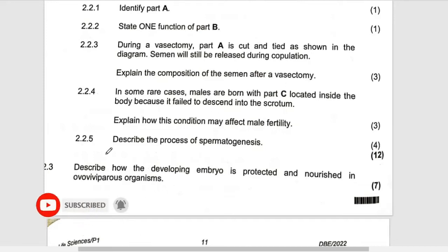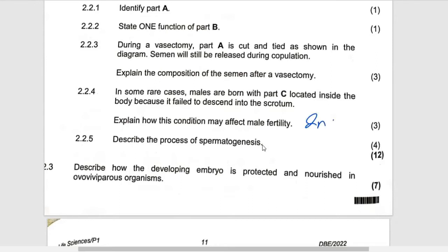Describe the process of spermatogenesis. Spermatogenesis — we have to explain the way we are supposed to explain it according to our examination guideline, not like the way it's explained in previous books. You can say that under the influence of testosterone, the diploid cell, which is 2N, found in the seminiferous tubule, will undergo meiosis to form haploid sperm cells.